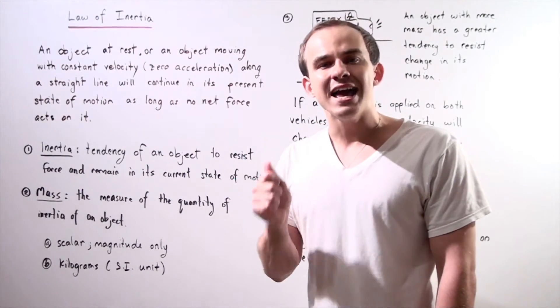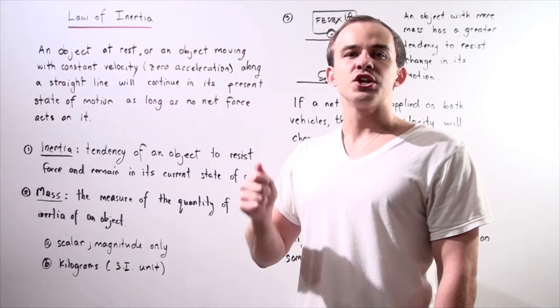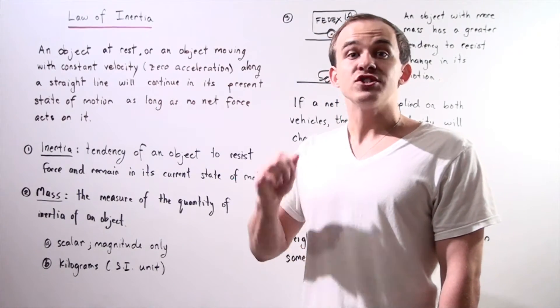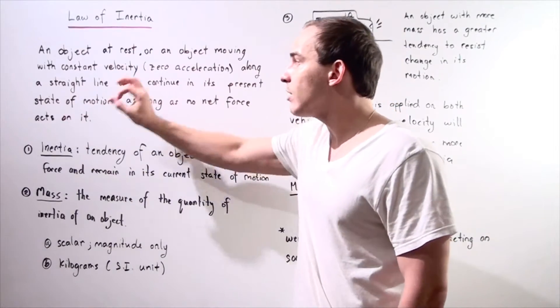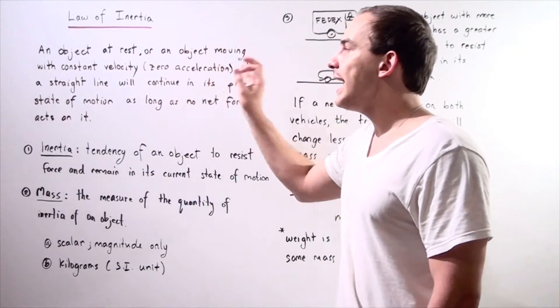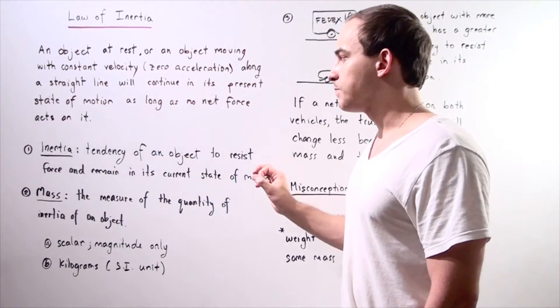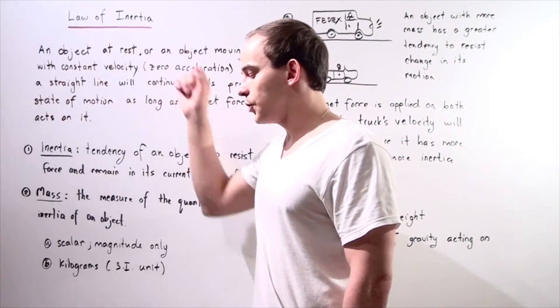An object at rest or an object moving with constant velocity along a straight line will continue in its current state of motion unless a net force acts on our object. As long as we have no net force, our object will remain in its current state of motion. That's what the law of inertia tells us.